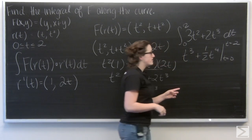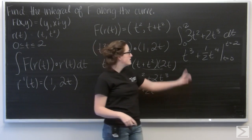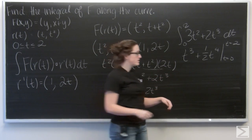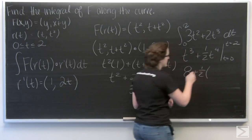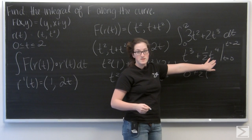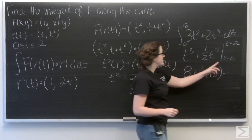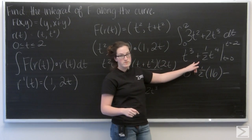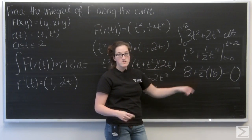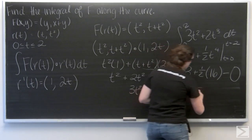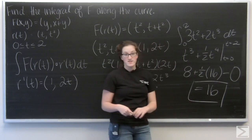So let's go ahead and evaluate that from t equals 0 to t equals 2. So first I'm going to plug in 2. 2 cubed gives me 8. And 2 to the fourth is going to be 16. And then when t equals 0, both of those terms are going to be 0. So I'm looking at 8 plus 8 or 16. And that's going to be my answer.